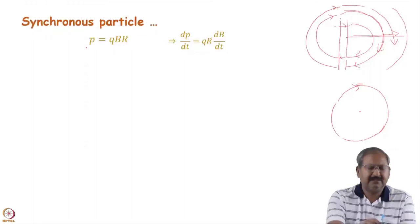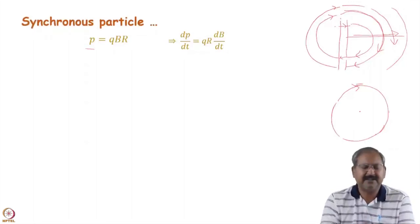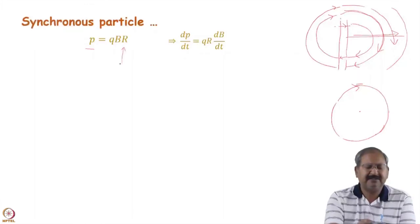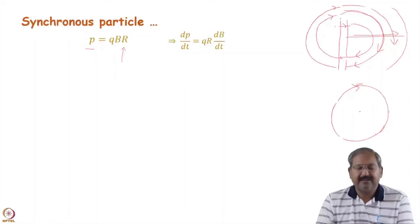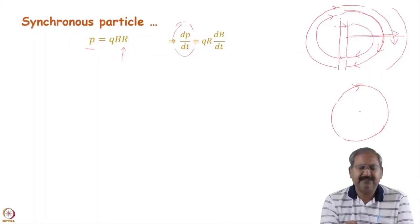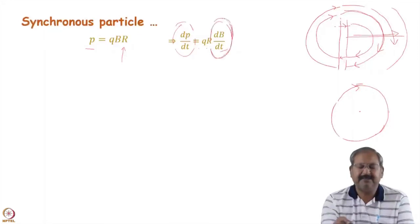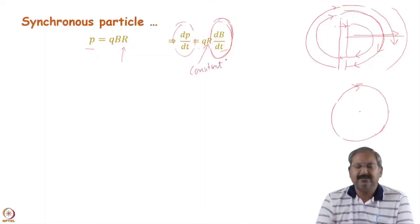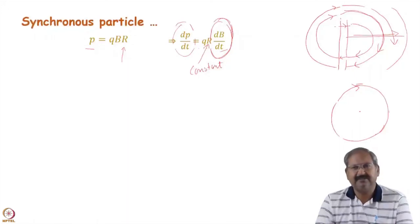Let p be the correct momentum of the synchronous particle. The radius of curvature is given by p = qBr, where B is the applied magnetic field. As the RF cavity electric field imparts energy to the particle and changes its momentum, we have dp/dt = qr·(dB/dt), meaning we must ramp the magnetic field to keep r constant.